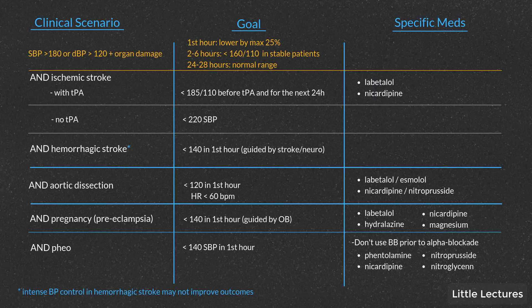For ischemic stroke: if the patient is getting tPA, blood pressure must be less than 185/110 prior to administration and for 24 hours afterward. If they're not getting tPA due to a contraindication, blood pressure does not need to be lowered unless it's greater than 220 systolic — it's actually a Class I recommendation not to lower it due to risk of worsening damage. For hemorrhagic stroke, acutely drop blood pressure to a goal of less than 140 in the first hour, and always call neurology to guide you.